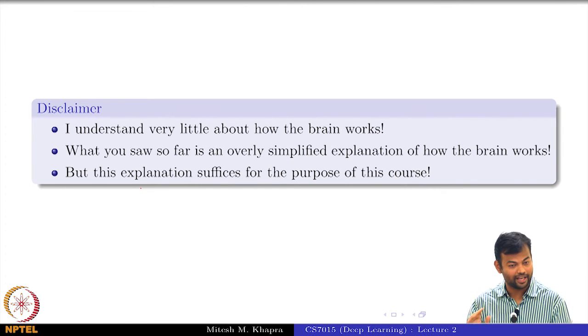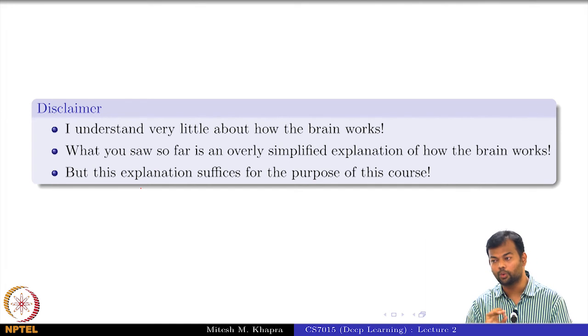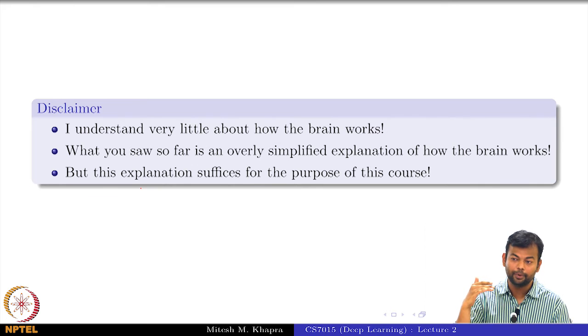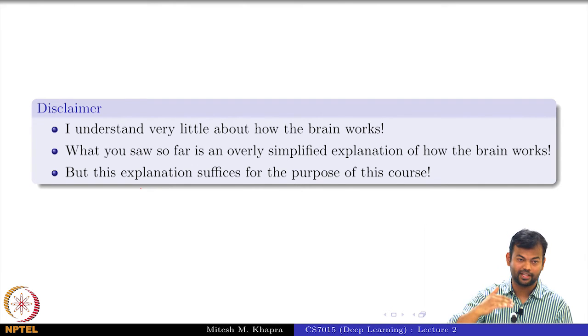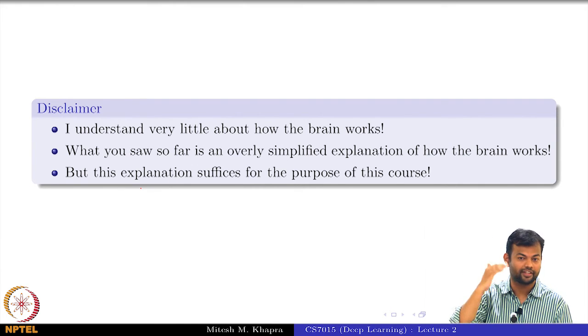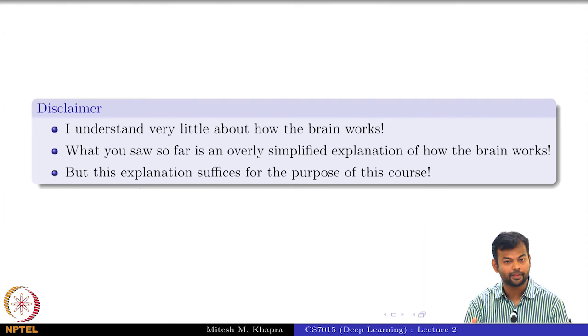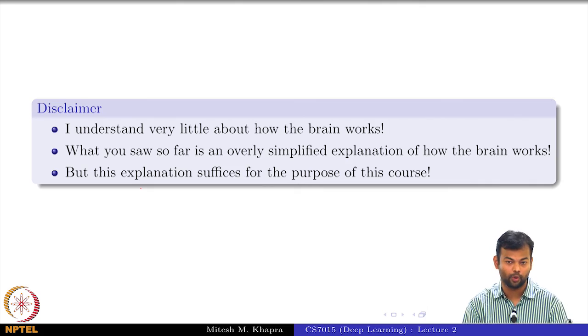Here is a disclaimer. I understand very little about how the human brain works. And what you saw is a very oversimplified explanation of how the brain works. What I told you is there is an input, a layer of networks which has many layers which does some processing and then you have an output. That is the very simplistic view that I gave you, which is an oversimplified version, but this version suffices for everything that we need for this course. This is not a biology or a neural processing course. So, it is enough for this course. That is where we will end module 1.